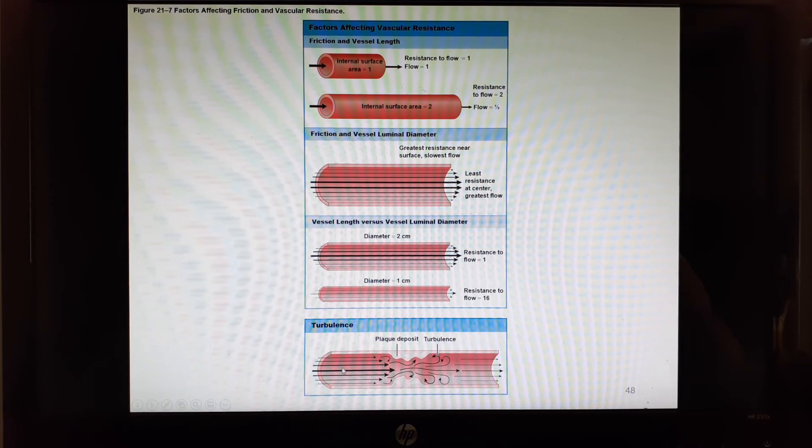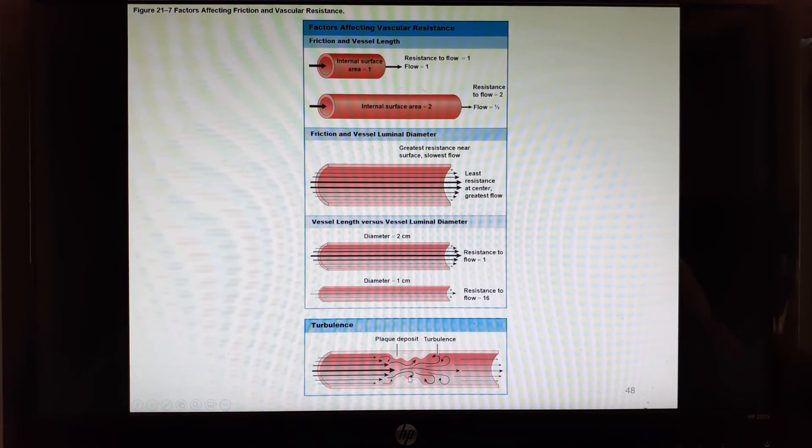And then down here is turbulence. This is a vessel that has two plaques that narrow it in one spot. As the blood is coming straight through, some of it can get through mostly straight. But anything that bounces and hits the plaque is going to swirl backwards. This is going to cause the blood flow to not move as evenly forward as it would. This is the turbulence, but it is going to increase resistance.